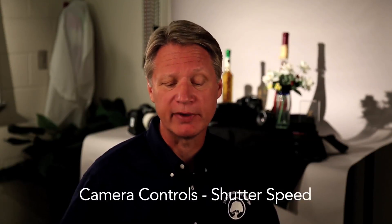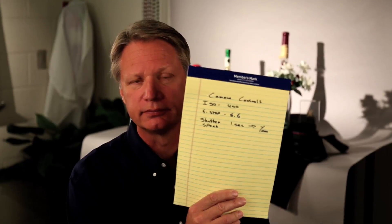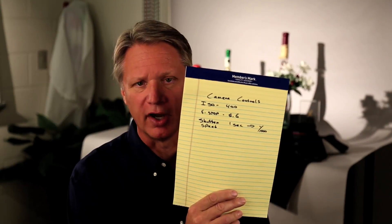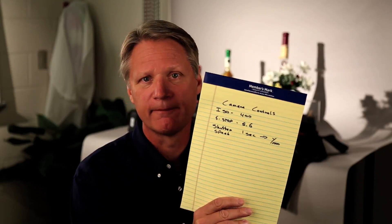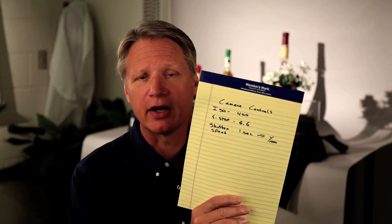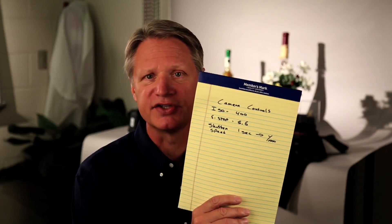Today we're going to look at the camera controls assignment and what's involved in doing that. The first part is that we have to set our ISO on our camera — we're going to set that at ISO 400. Then we're going to find our f-stop and set that at f/5.6, and find our shutter speed and set the camera at one second. I have the camera set at ISO 400, one second, f/5.6, and you can see all those settings on your menu screen on the camera.